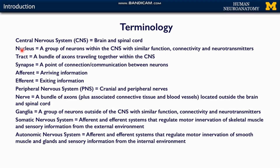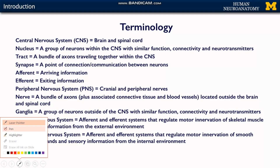There is a term commonly used in neuroanatomy which is 'nucleus.' This nucleus is very different from the nucleus used in cell biology. In neuroanatomy, nucleus means a group of neurons within the CNS with a similar function, connectivity, and neurotransmitters.